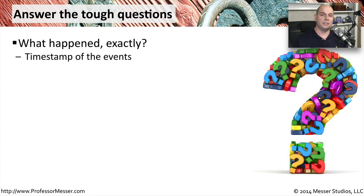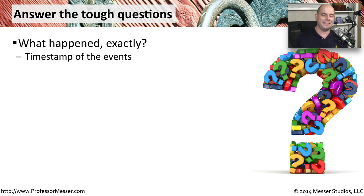One of the obvious questions to answer is: what happened? You should be able to take all of your evidence to march backwards through time to the point when the incident first occurred. You may have to gather information from many different systems across many different logs to be able to understand exactly what happened during the incident.